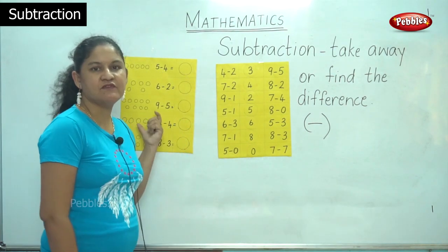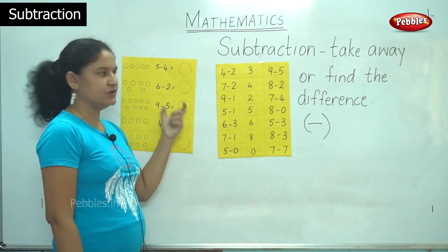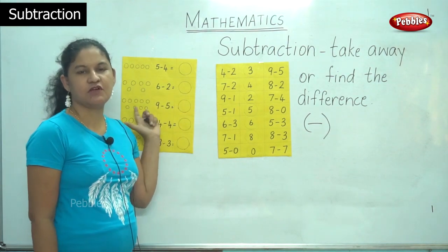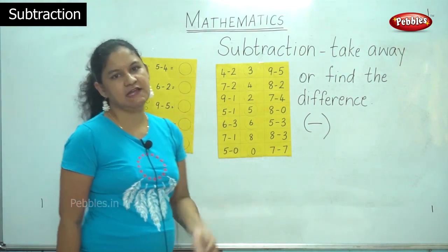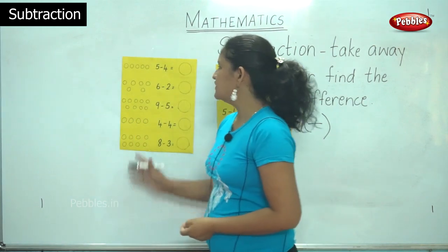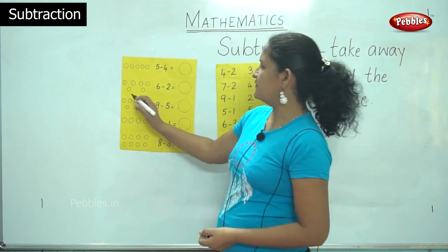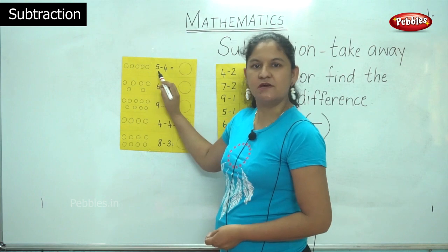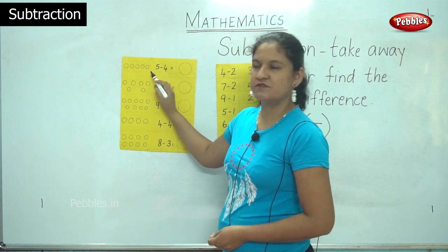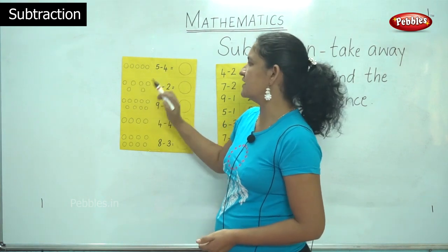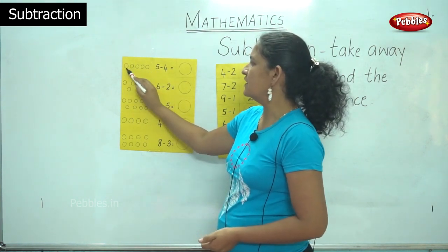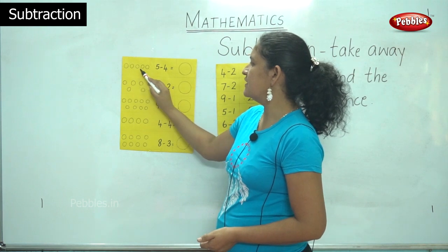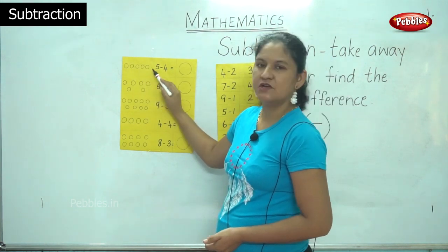So we have a small activity which I have done on a chart, and we are going to see how to subtract. I have small balls drawn with the number 5. So let us count the number of balls: 1, 2, 3, 4, and 5.